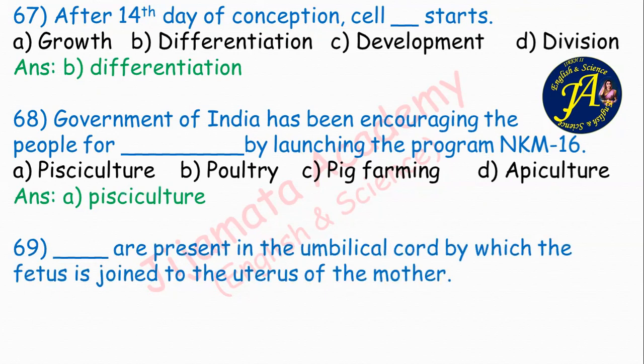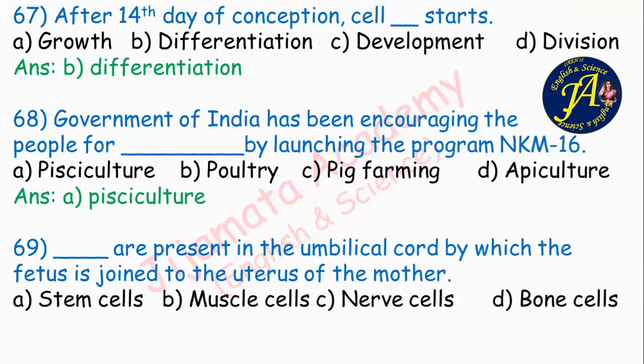Dash are present in the umbilical cord by which the fetus is joined to the uterus of the mother. Options are stem cells, muscle cells, nerve cells, bone cells. The umbilical cord contains stem cells. Option A: stem cells is the correct answer.